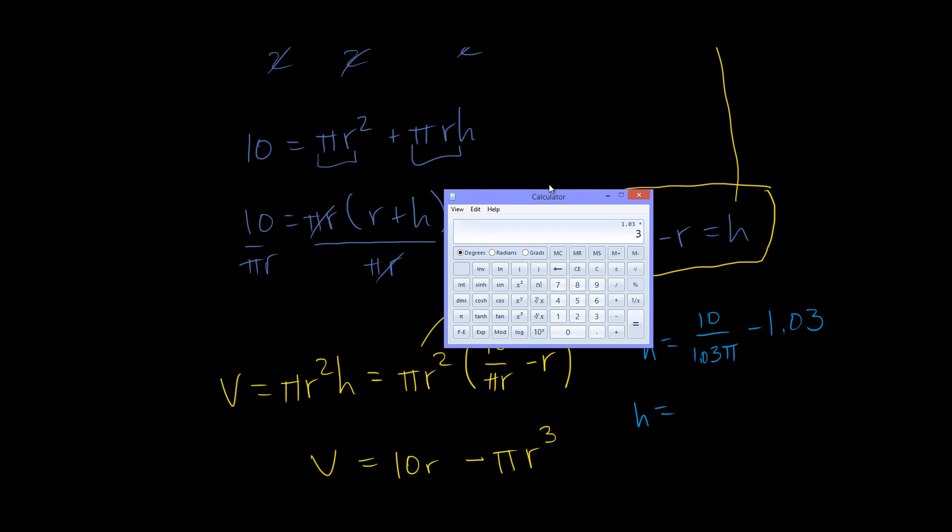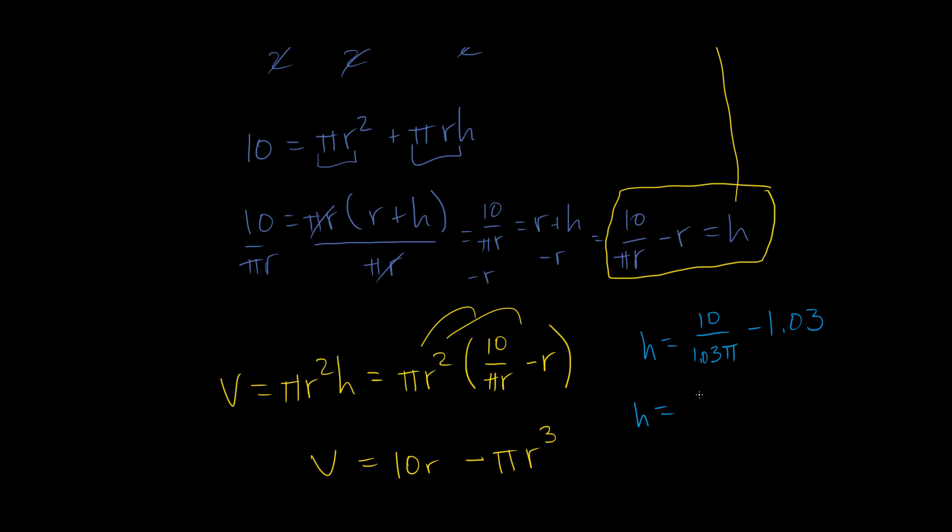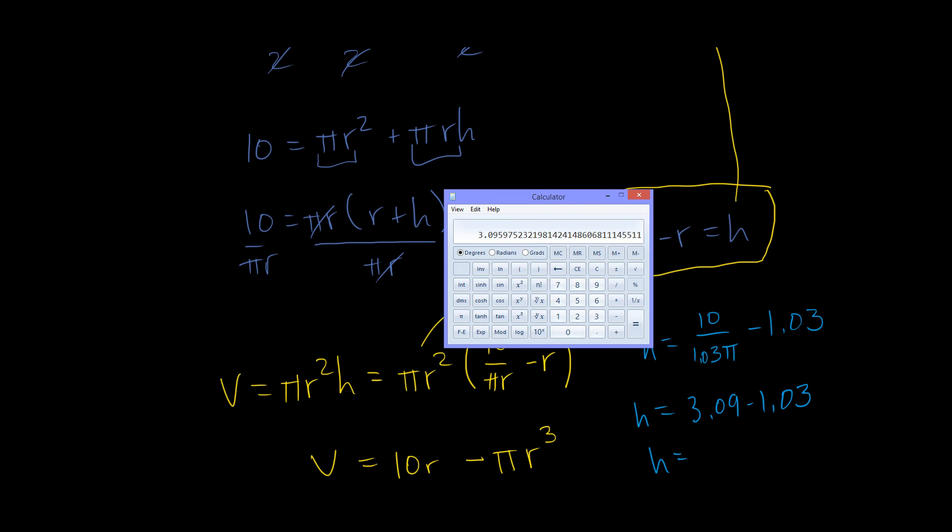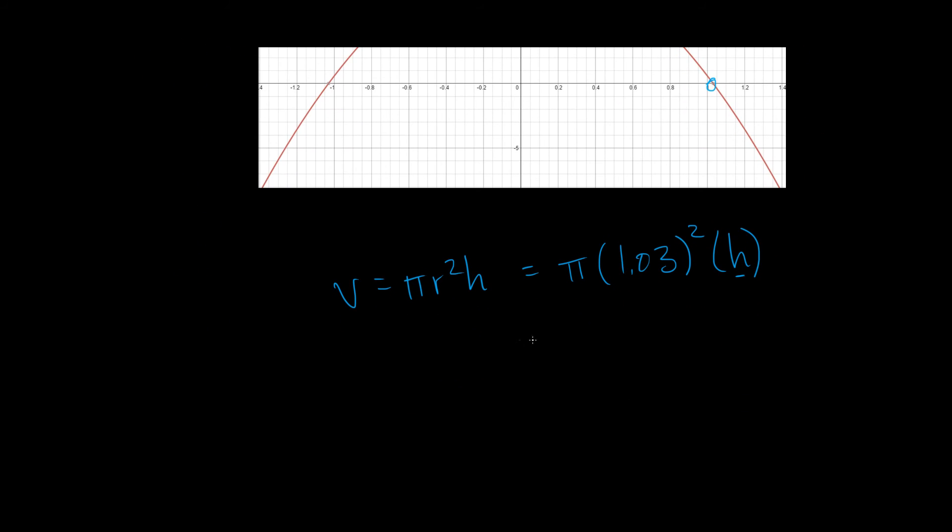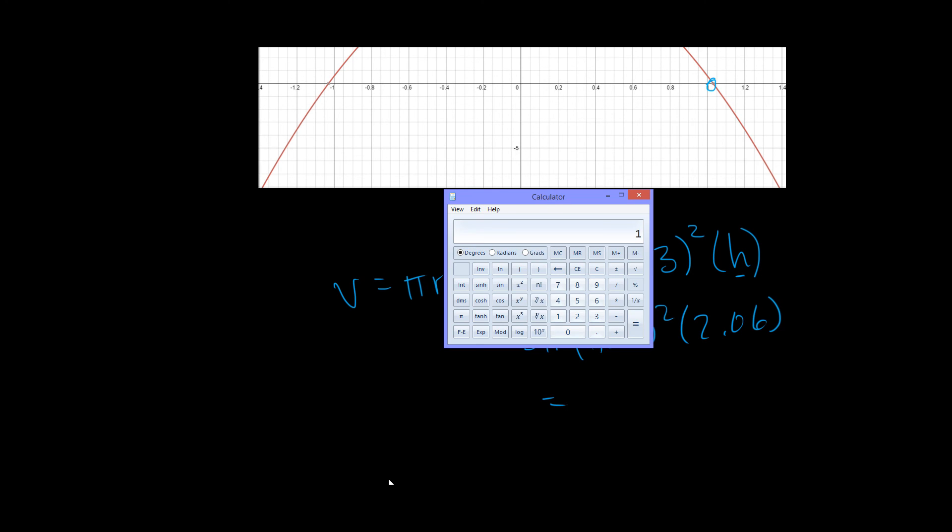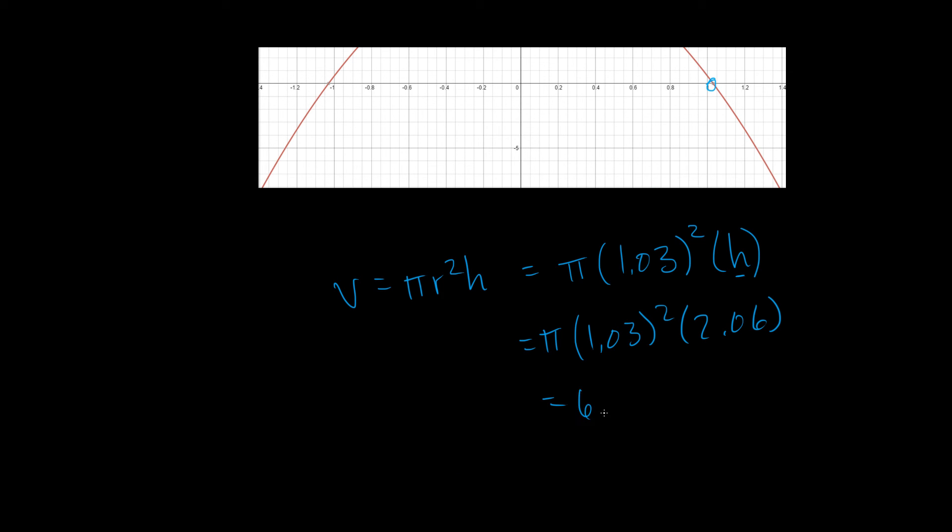So 10 divided by 3.23 gives us 3.09. So 3.09 minus 1.03. And we get h is equal to 2.06. Very cool. So this is equal to pi times 1.03 squared times 2.06, which equals 1.03 times 1.03 times 2.06 times 3.14, or 6.86 meters cubed.